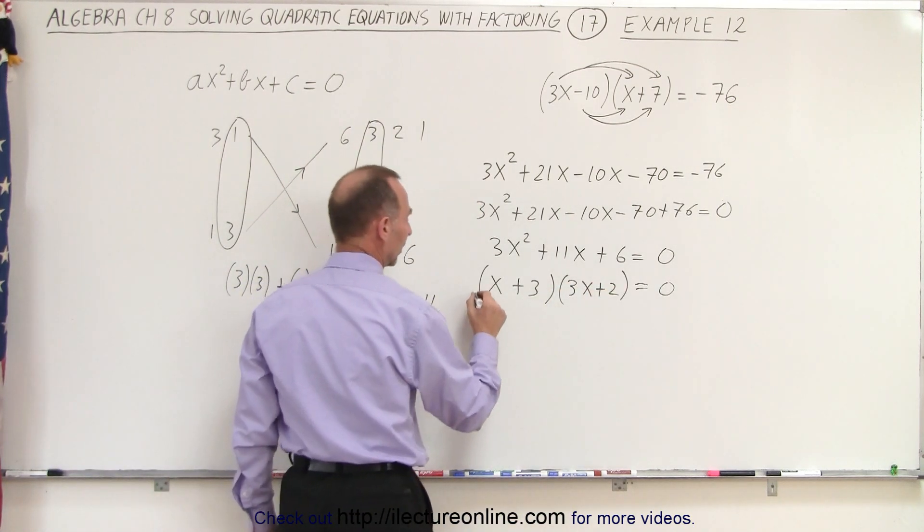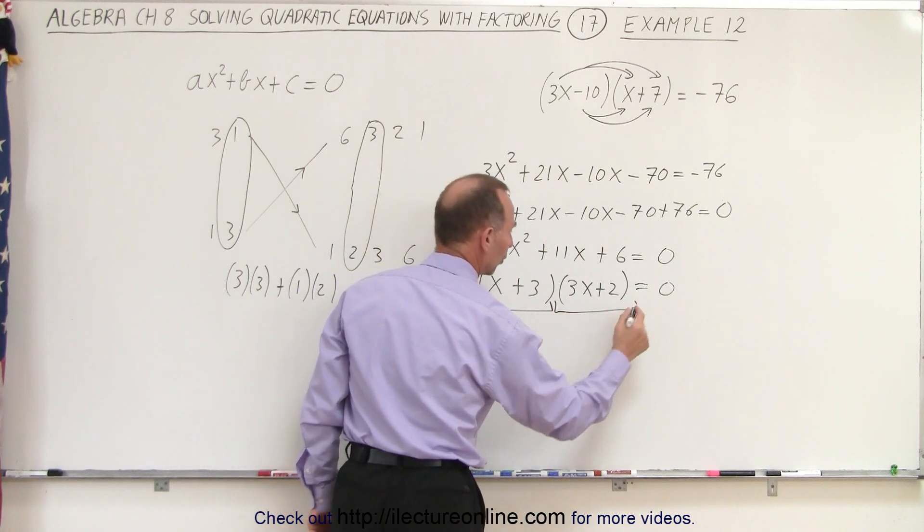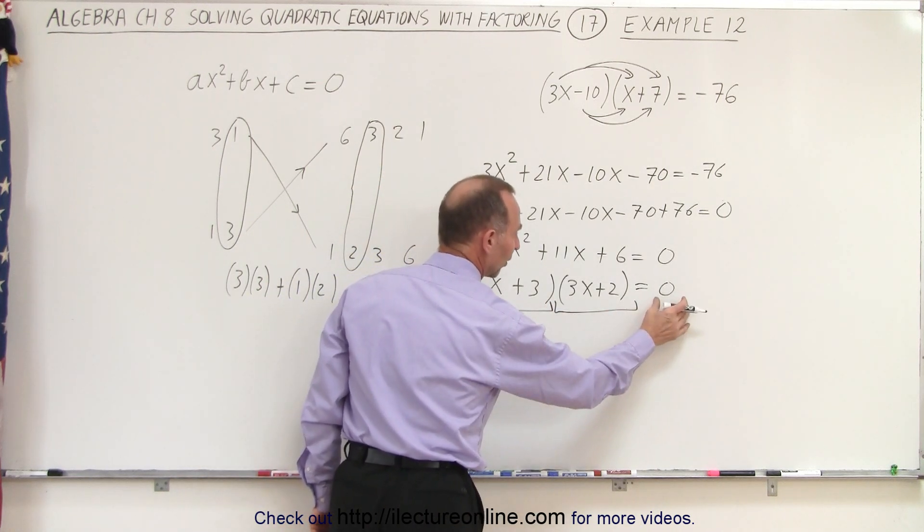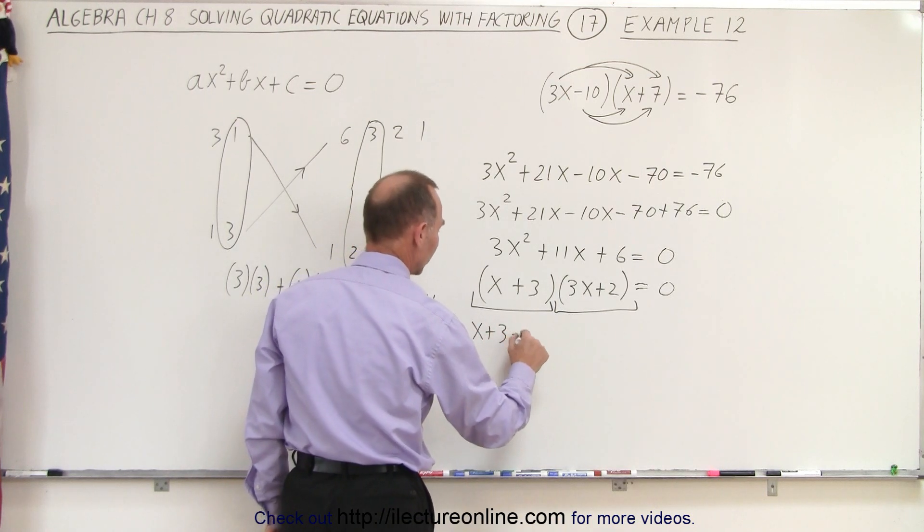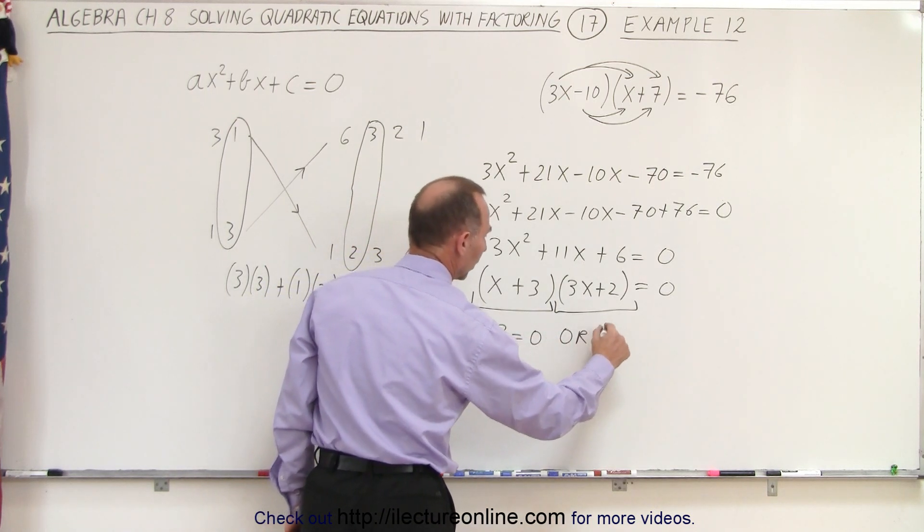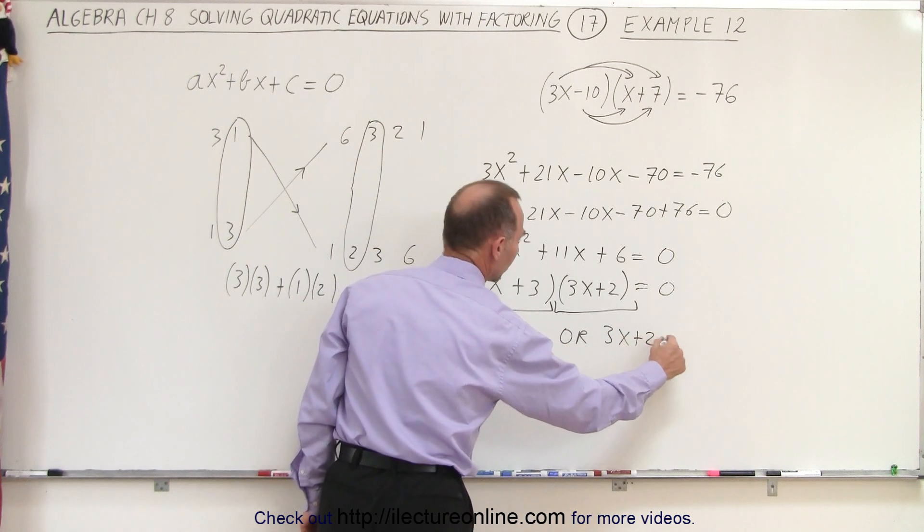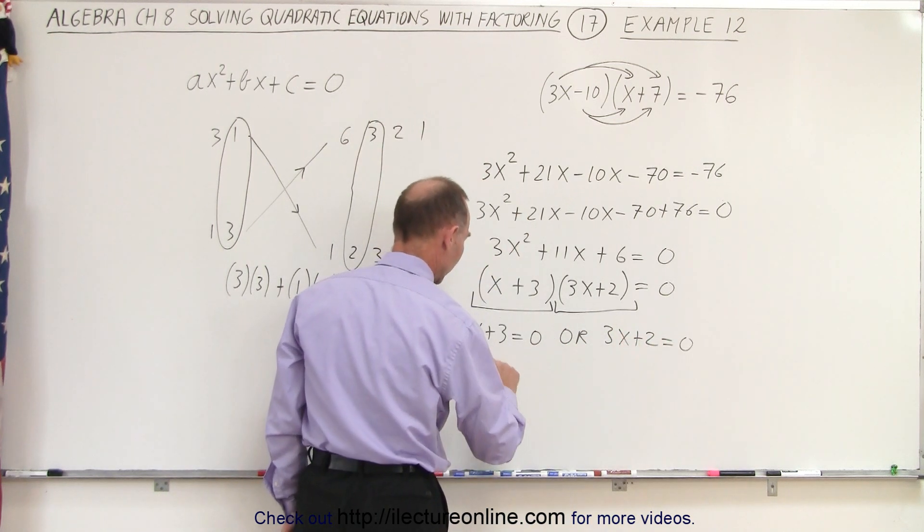Now we can go ahead and realize that since we have the product of 2 binomials, and they give us a result of 0, that means that x plus 3 must equal 0, or 3x plus 2 must equal 0.